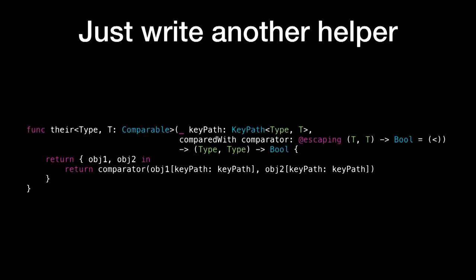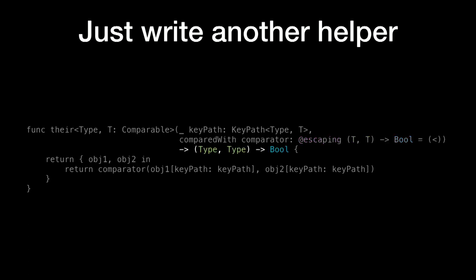So how can we do this? We're going to write a new helper — we'll call it 'by', and you'll understand why in a minute. It takes a KeyPath from a type to get a property, and a comparator: a function that takes two instances of the property type and returns a boolean — a standard comparison function. To make the code easy to use, we give it a default value which is the less-than operator. We return a function that takes two instances of a type and returns a boolean. Inside, we just invoke the KeyPath over both objects and call the comparator.